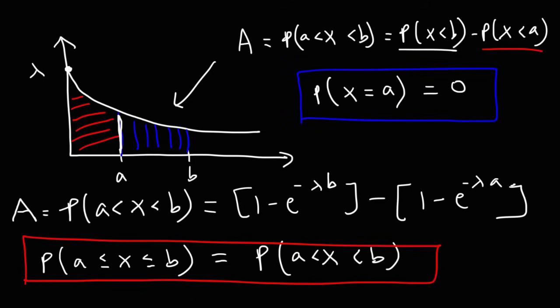To review: the PDF, the probability density function, is f(x). It tells you the shape of the graph, whether it's an exponential, normal, or uniform distribution. The CDF, the cumulative distribution function, gives you the area to the left of some value — whether that's a or b — representing the accumulated probability up to that point. That's the difference between the PDF and the CDF.